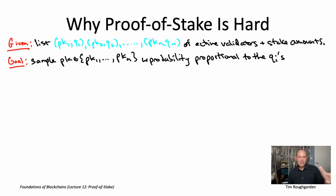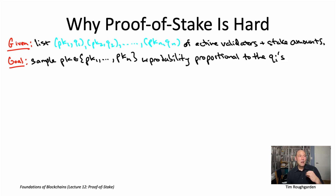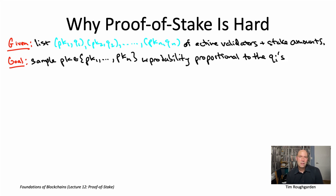Why do we want this property? Why do we want to sample with probability proportional to stake? Well, that gives us Sybil resistance. This means the probability that a node is selected is independent of how many IDs it uses. It doesn't matter if it's using one public key or many public keys — its selection probability depends just on the overall amount of stake that it's committing.